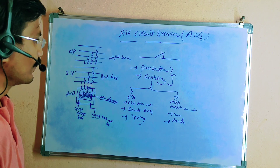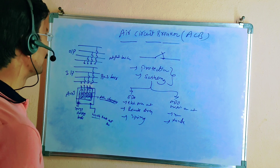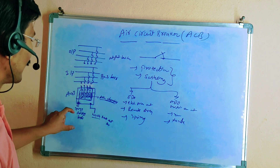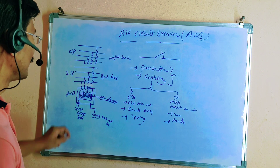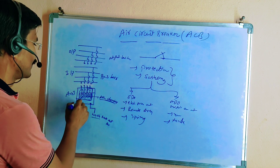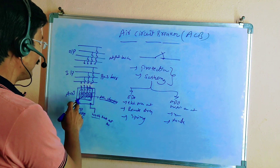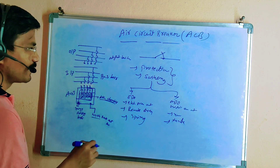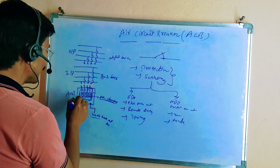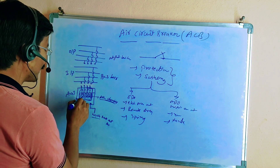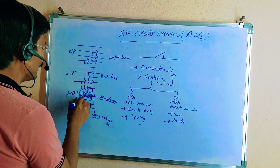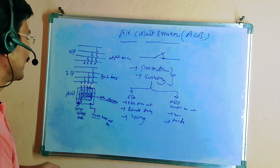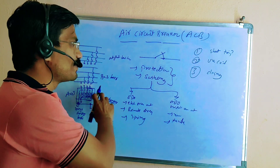The arc chamber handles the input and output connections of the ACB breaker. For MDO breakers, spring charging is done by handle; for EDO breakers, an internal motor performs the spring charging automatically.